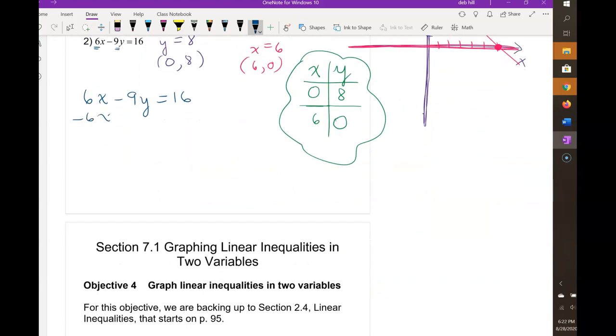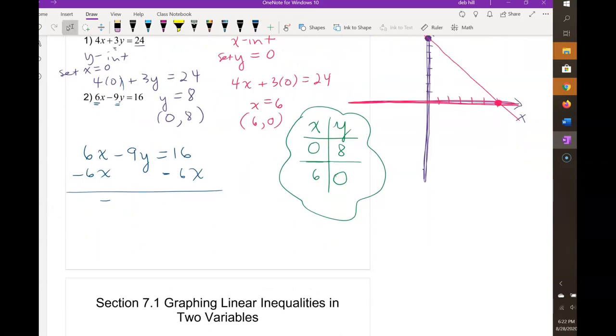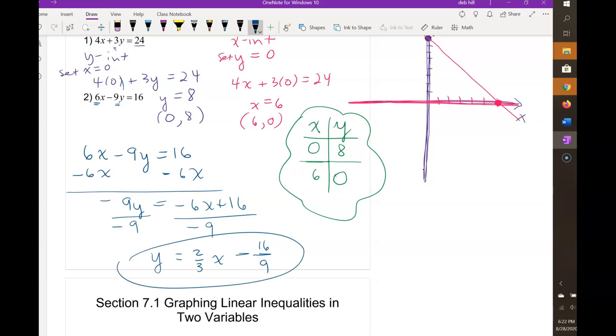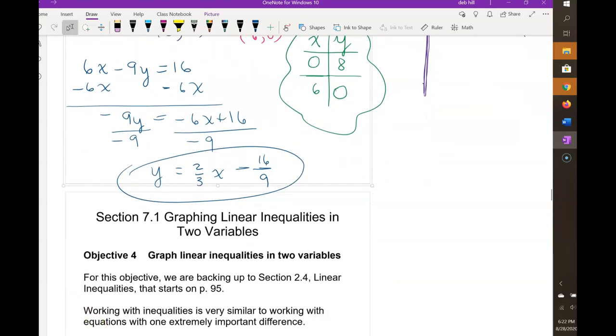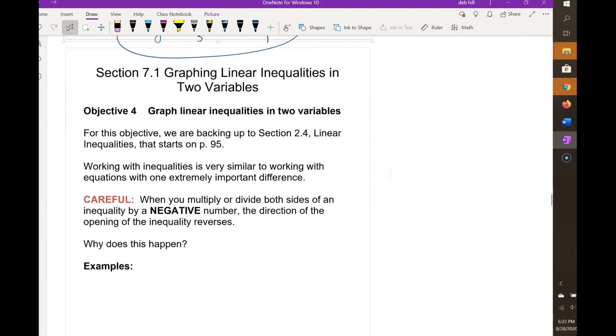You would subtract 6x from both sides and have negative 9y equals negative 6x plus 16. Then you divide both sides by negative 9 and reduce any fractions to get y equals 2 thirds x minus 16 ninths. It'd be kind of a pain to graph because it has a very strange y-intercept, but we could figure it out. We could make our boxes on our graph each be 1 ninth.